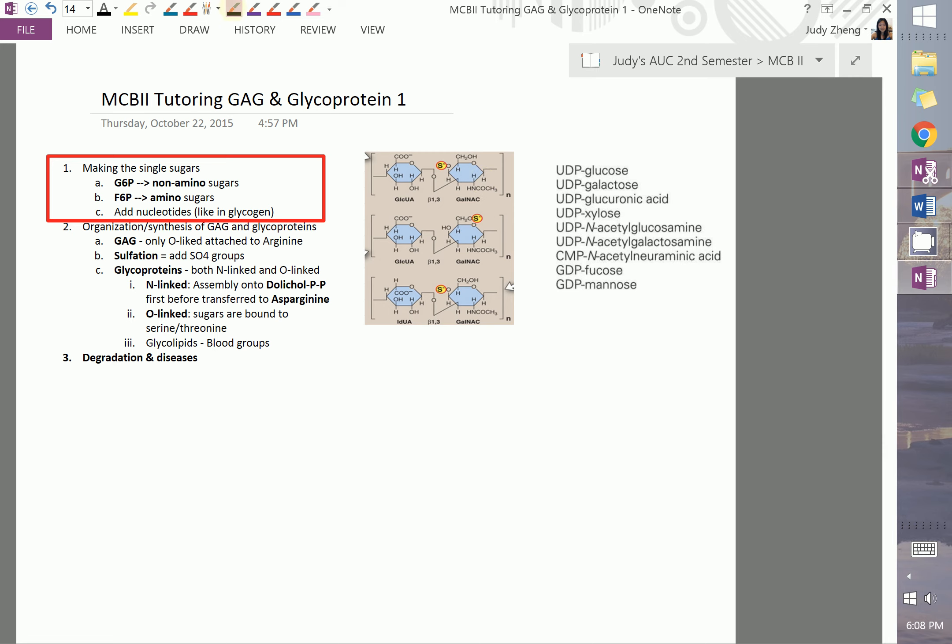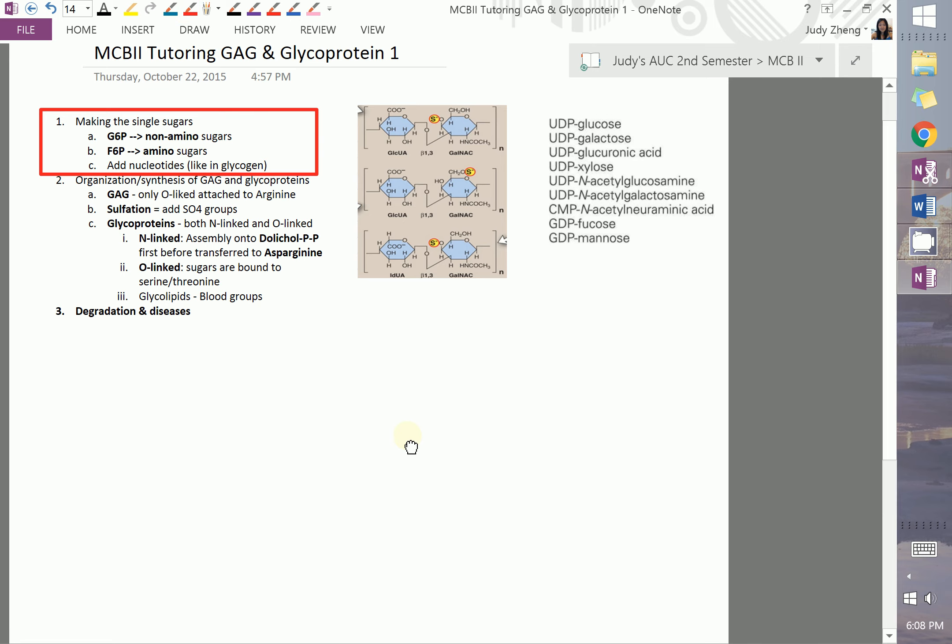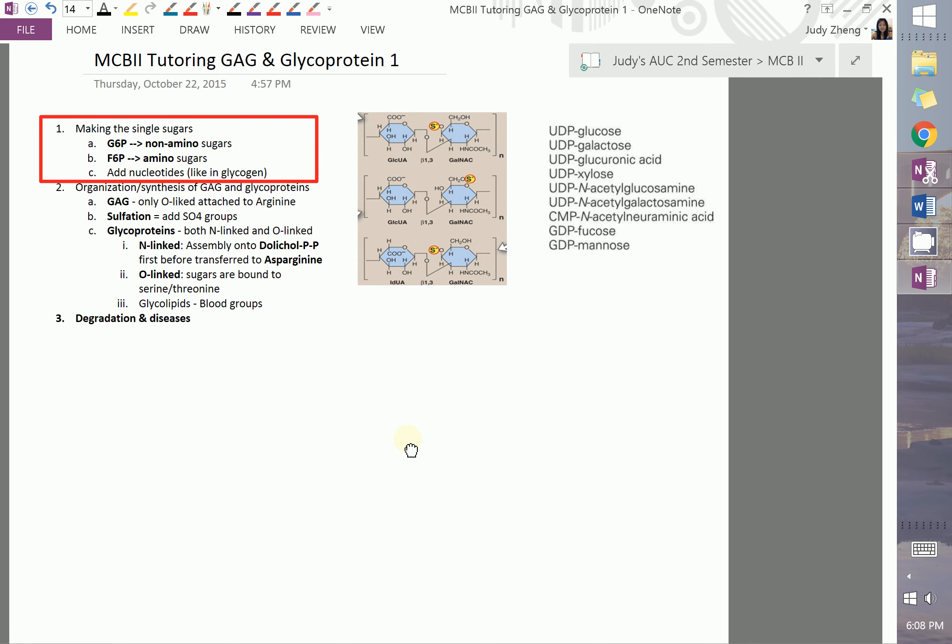But first I want to start off by talking about how these basic building blocks are made. Over here, these are just some examples of what these sugars look like. You basically have sugars and you can have some sulfate attached, and often they actually have some nitrogens attached like over here. The pathways for making these specific sugars, which are over here, stem from two different steps in glycolysis.